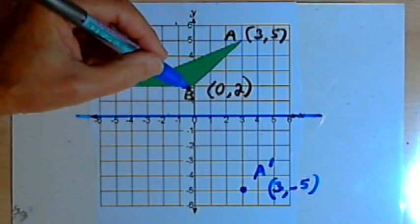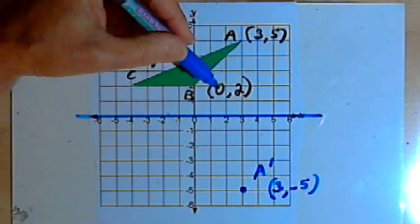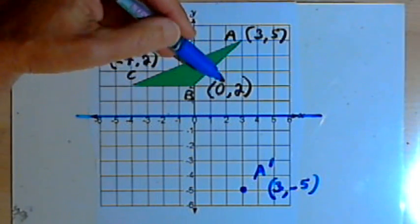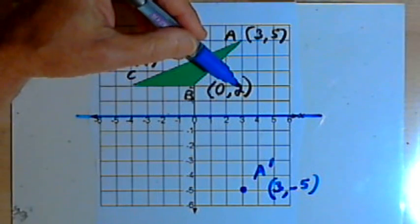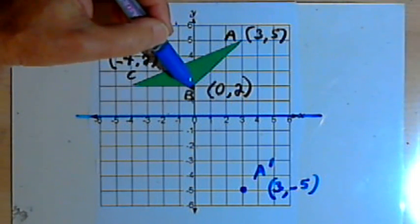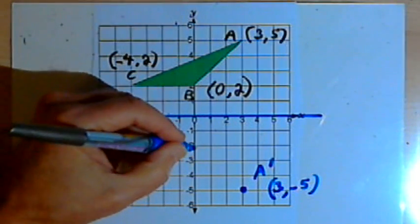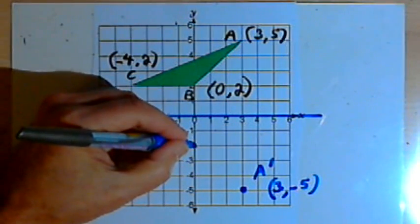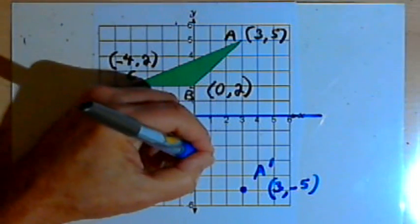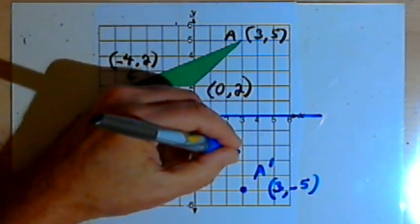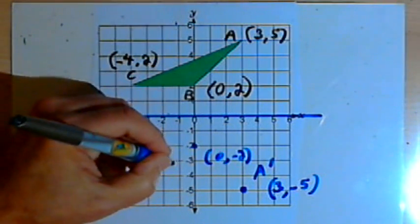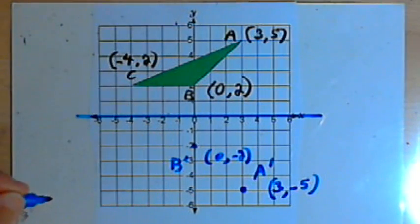Going on to point B, that's at 0, 2. So I know that point B is 2 units away from the x-axis, the line of reflection. So I want to go 2 units away on the other side of that axis. So that's going to be at 0, negative 2, and that will be point B prime.